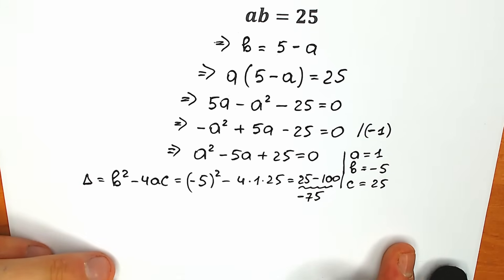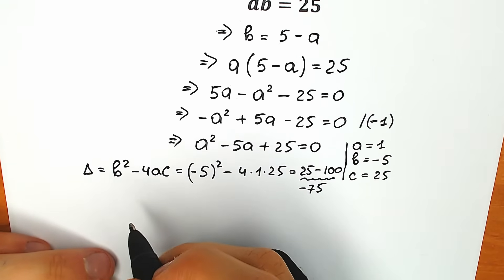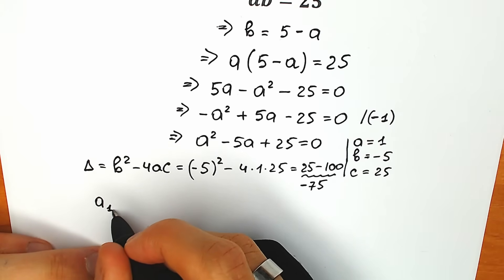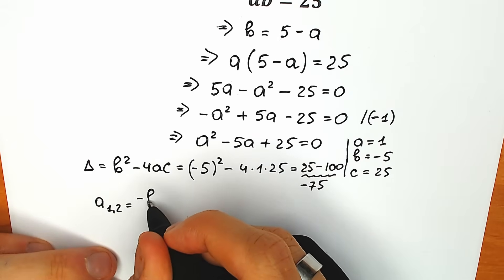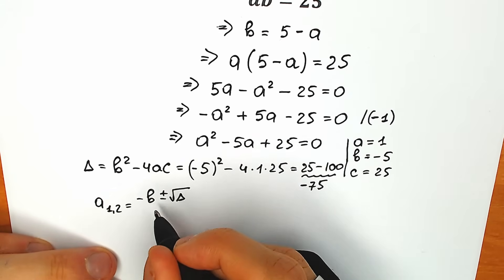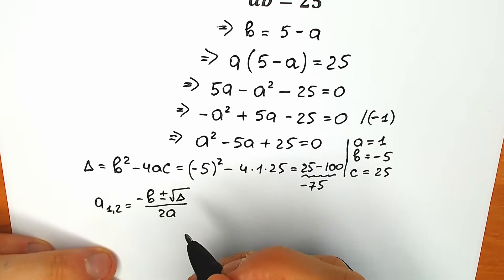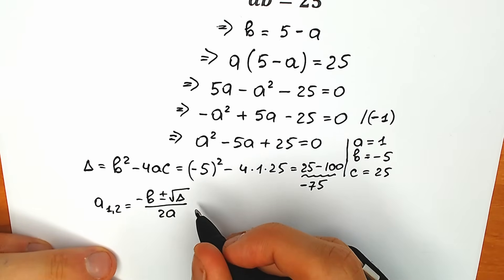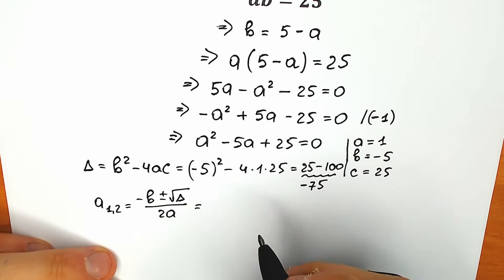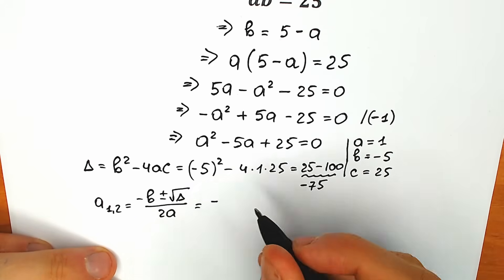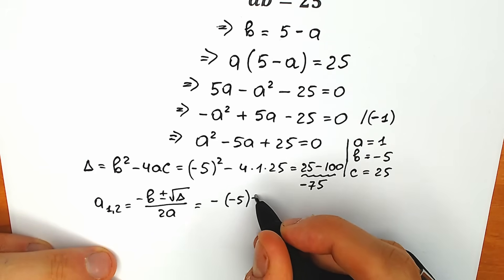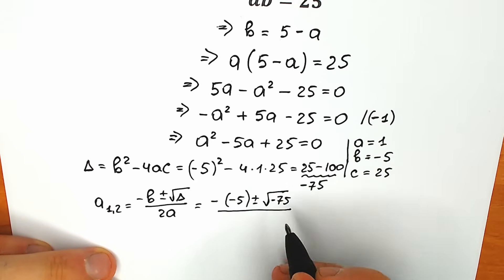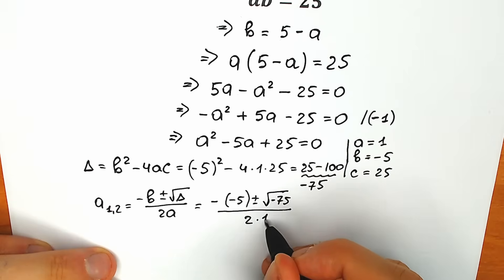Let's plug in this discriminant into the well-known formula. So a₁ and a₂ equal to minus b plus or minus square root of discriminant, all over 2a. I want to underline a really important moment: our discriminant is negative, so it looks like these are complex roots. So we have minus b equal to 5, plus or minus square root of minus 75, divided by 2 times 1, which is 2.